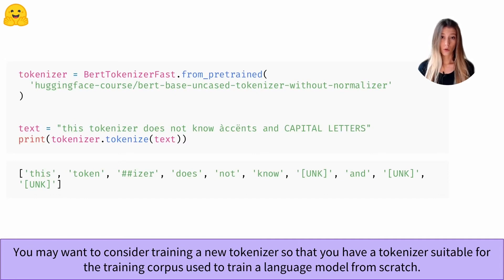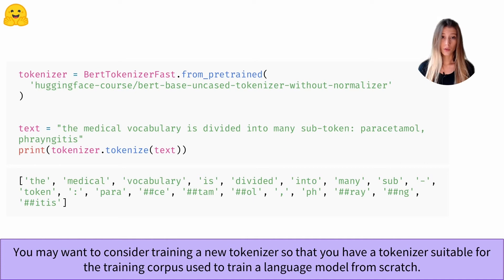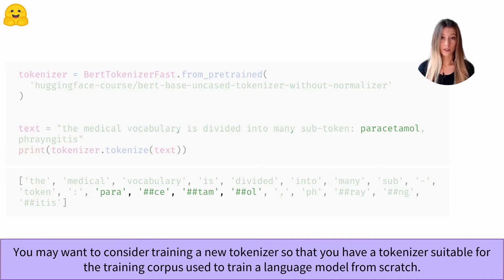In this other example, we can see that the tokenizer replaces words containing characters with accents or capital letters with unknown tokens. And if we use this tokenizer on medical vocabulary, we see again that a single word is divided into many sub-tokens — 4 for 'paracetamol' and 4 for 'pharyngitis'.